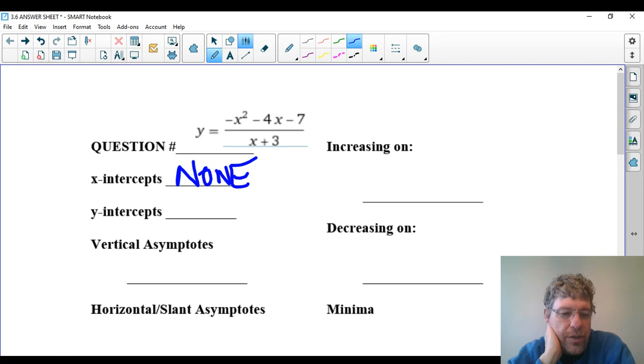The y-intercepts, you plug in 0 for x. So basically, all the x's drop out, and I'm left with negative 7 over 3.